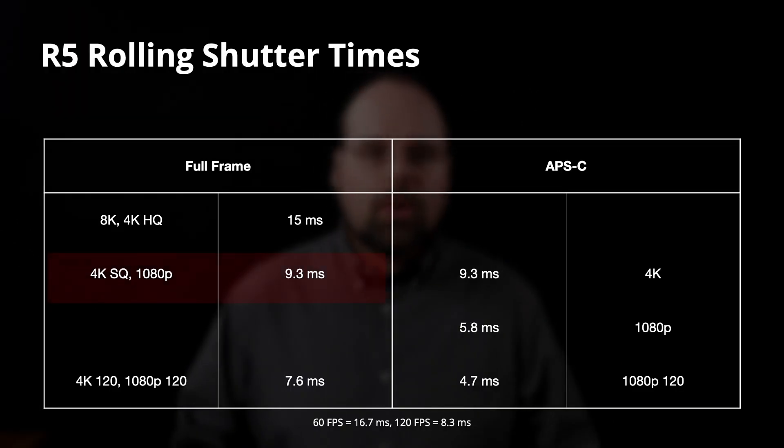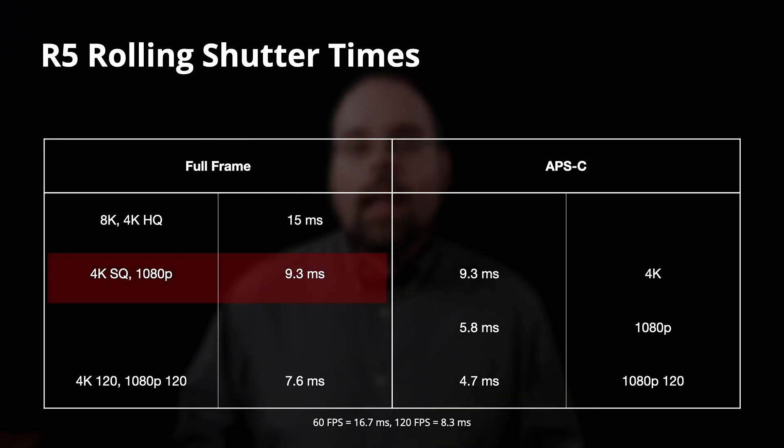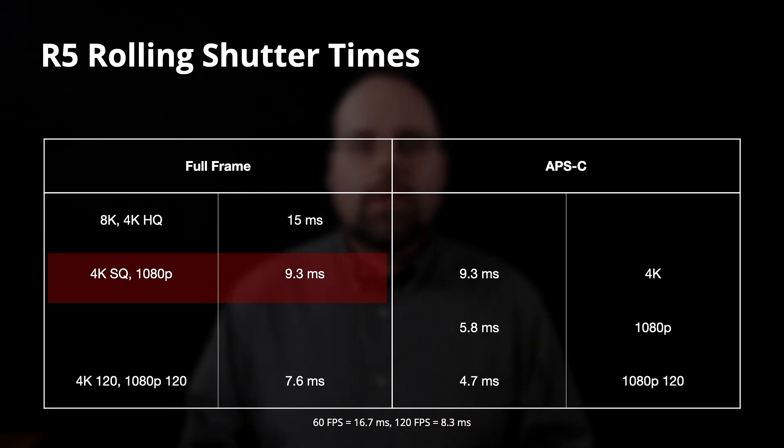Dropping image quality down to 4K standard quality and 1080p while shooting in full frame reduces the rolling shutter time to 9.3 milliseconds. This strongly implies that 1080p footage shot on an R5 in full frame mode is downsampled from the 4K standard quality footage. 4K standard quality is line skipped from the 8K sensor output, which explains the difference in rolling shutter time.